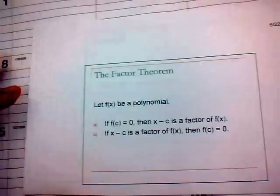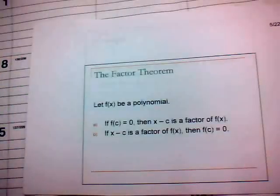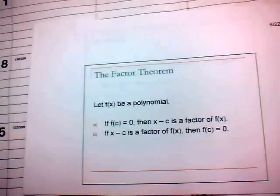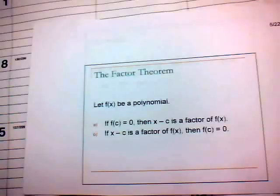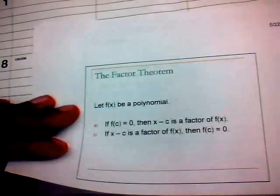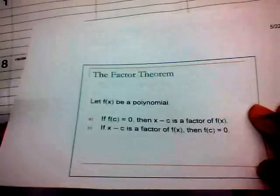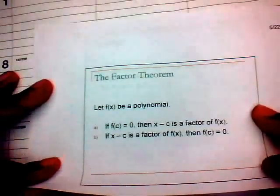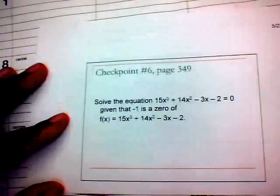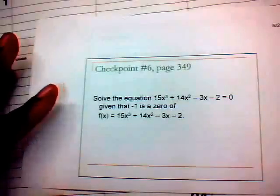The factor theorem states: if f of x is a polynomial and f of c equals 0, then x minus c is a factor of f of x. Conversely, if x minus c is a factor of f of x, then f of c equals 0.